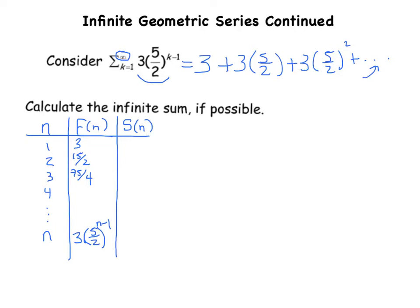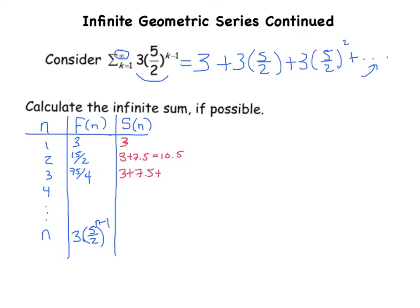Now our s of n column: the sum of the first term would just be 3. The sum of the first two terms is 3 plus 15 halves — I'll write 15 halves as a decimal, 7.5 — so that equals 10.5. The sum of the first three terms would be 3 plus 7.5 plus 75 fourths, which is 18.75, and that all adds up to 29.25.